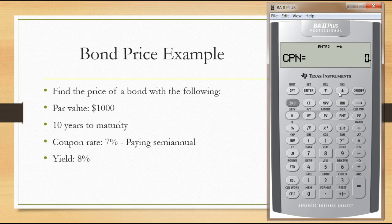It asks for the coupon. We put the coupon in as the annual coupon rate that is shown, 7%. We hit the down arrow, and now we come to the redemption date for this bond.